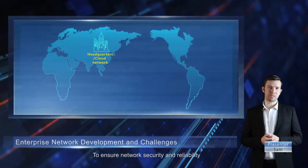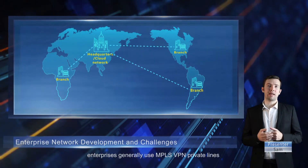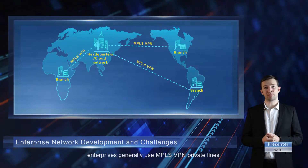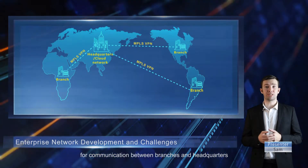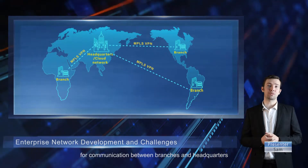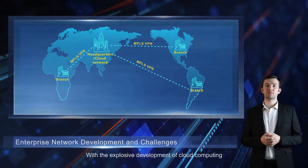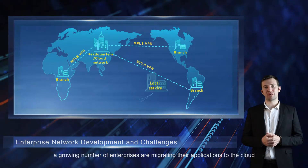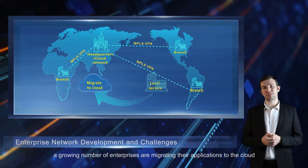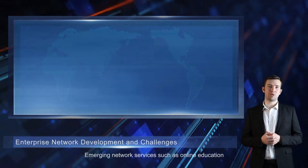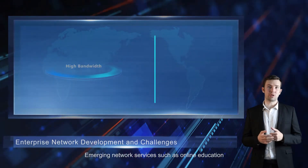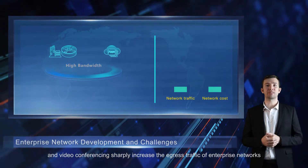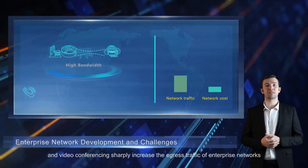To ensure network security and reliability, enterprises generally use MPLS VPN private lines for communication between branches and headquarters. With the explosive development of cloud computing, a growing number of enterprises are migrating their applications to the cloud. Emerging network services such as online education and video conferencing sharply increase the egress traffic of enterprise networks.